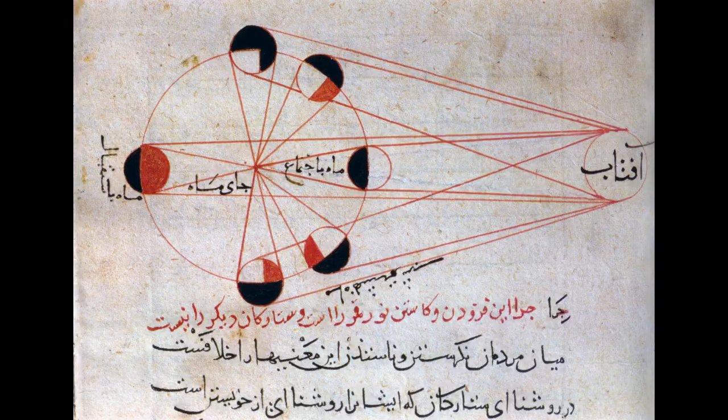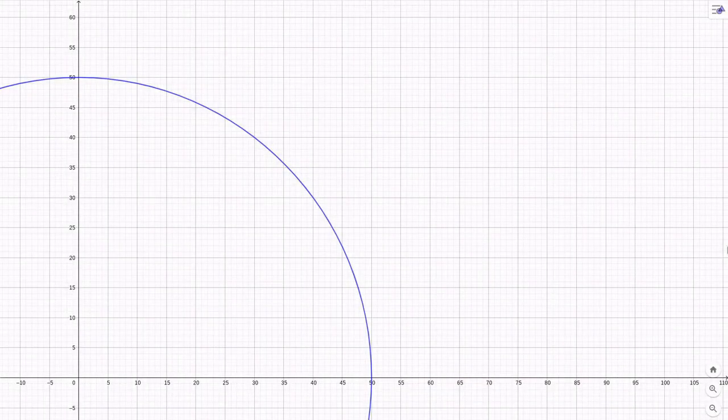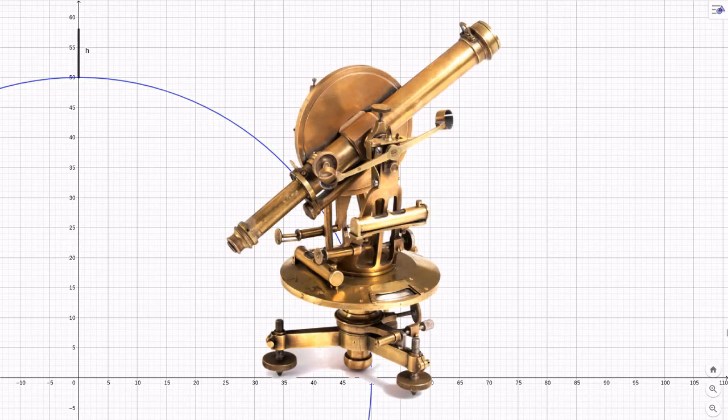And here is how it works. We need a mountaintop with a clear line of sight to the horizon at sea level, a theodolite, and some trigonometry.